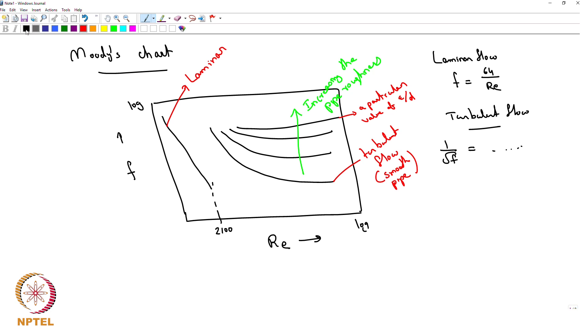People have tried to come up with relations bringing everything together. One such useful expression, if you do not want to use a graph, is one by root f is equal to minus 2.0 log of epsilon by d divided by 3.7 plus 2.51 divided by Re times root f. This equation is also sufficient to calculate friction factor.